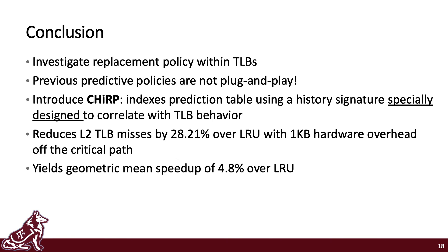In conclusion, this work investigated the effect of replacement policy within TLBs. We show how previous predictive policies for other caching structures are not plug-and-play for the TLB. We then introduce CHIRP, which indexes a prediction table using a history signature specially designed to correlate with TLB behavior. CHIRP reduces L2 TLB misses by 28.21% over LRU with a 1-kilobyte hardware overhead that is off the critical path, and yields a geometric mean speedup of 4.8% over LRU. Thank you very much, and I hope we can see each other physically soon in the future.